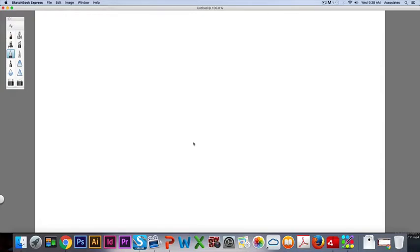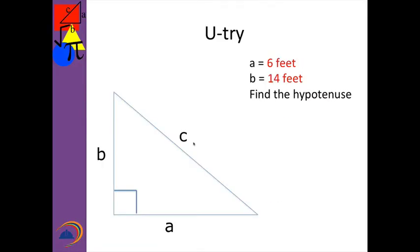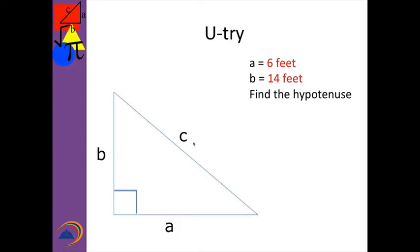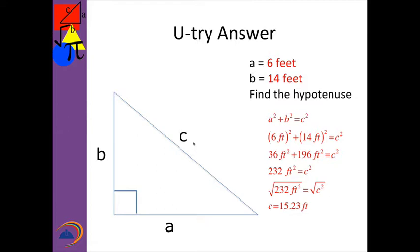Welcome back. Let's go back to our PowerPoint — there's my answer. Here's a U-try: fill in that A is 6 feet and B is 14 feet. Teacher, pause the video until students have completed an answer — please remember to label the answer — then call on non-volunteers. Welcome back. 6 squared was 36 feet squared. 14 squared is 196. 36 plus 196 equals 232. Took the square root of both sides to two decimal places: 15.23 feet.